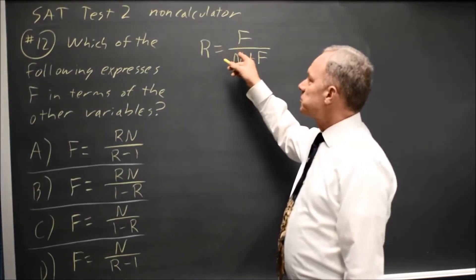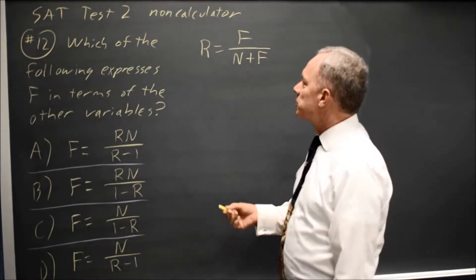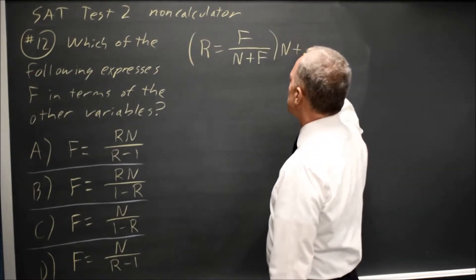To solve for f, first I'm going to cross-multiply. The denominator is divided by n plus f, so I'm going to multiply both sides by n plus f,